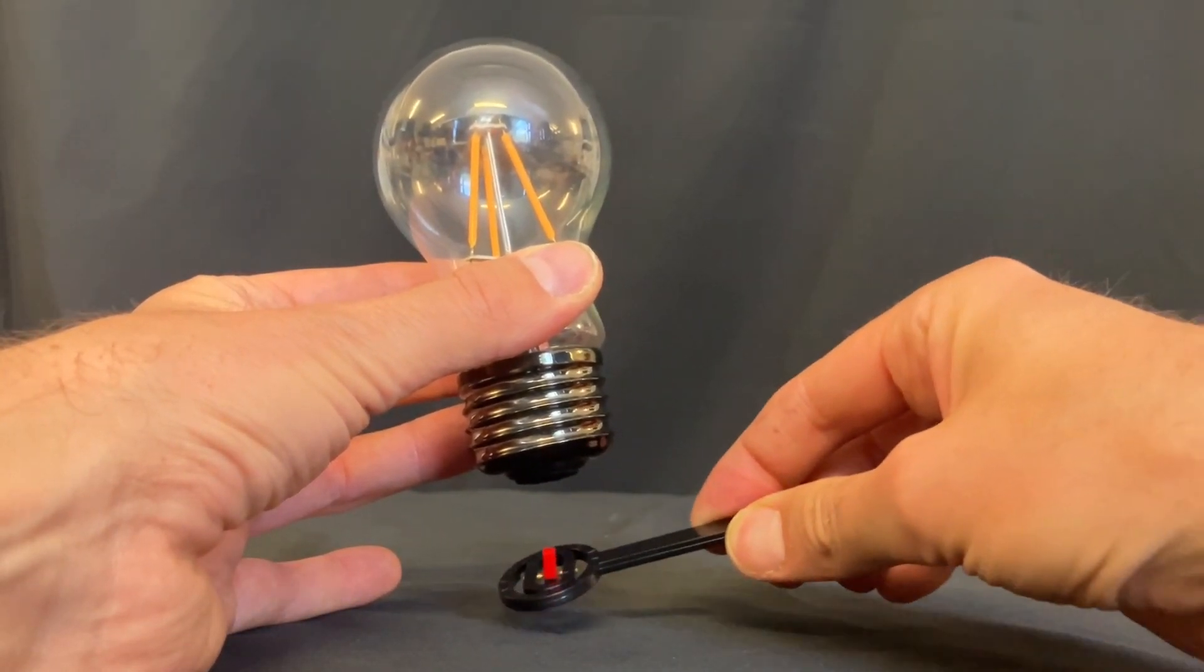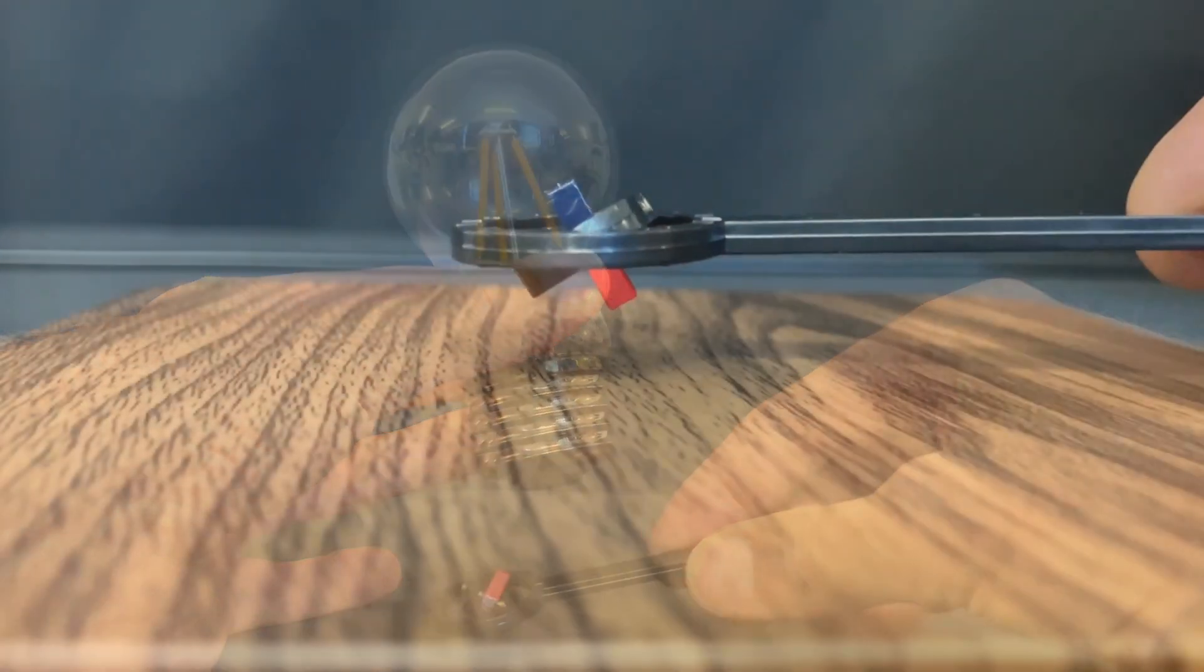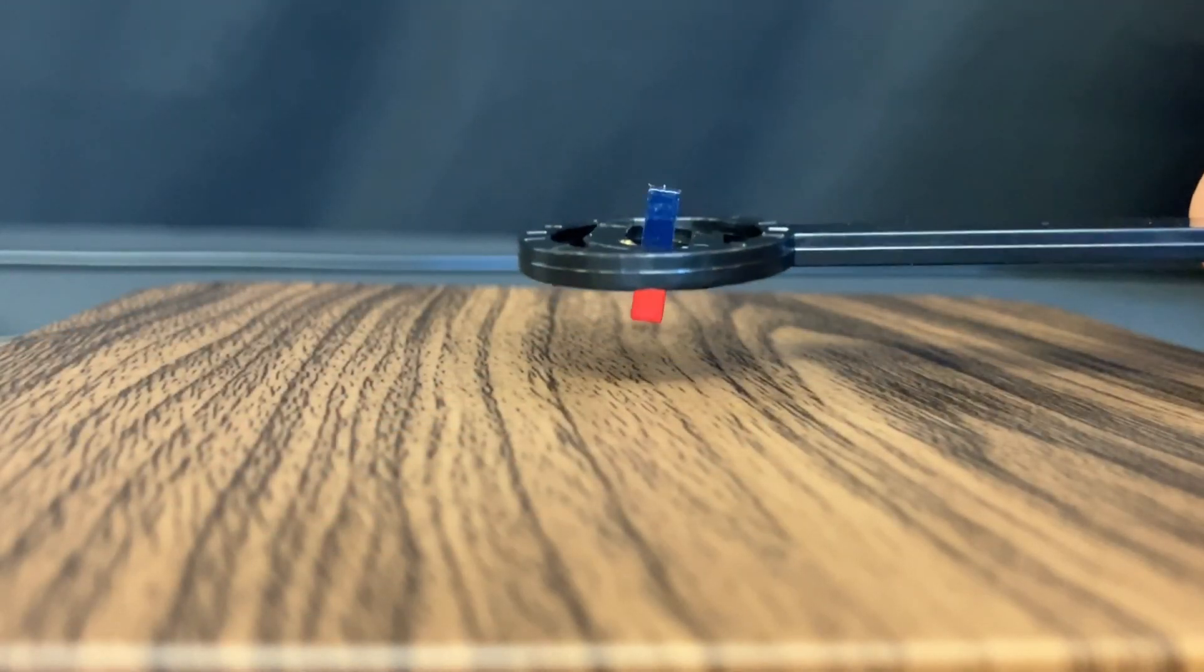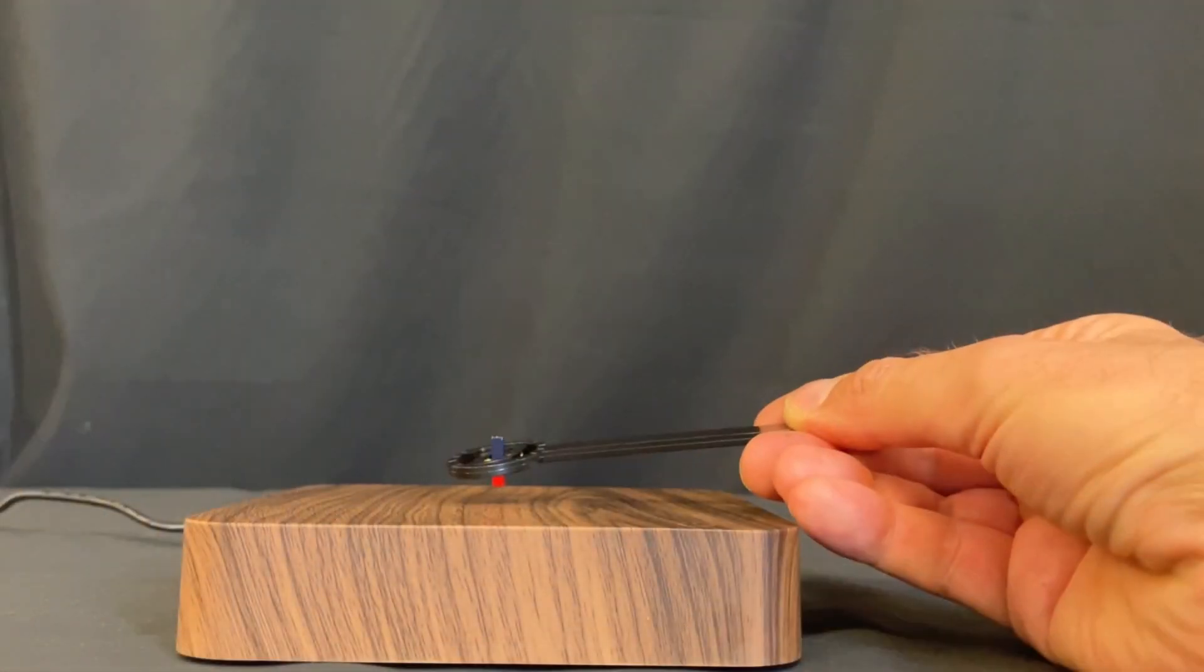The base of the light bulb is attracting the north pole of the other magnet, so it has a south pole. The centre of the base does exactly the same thing, so it also has a south pole.